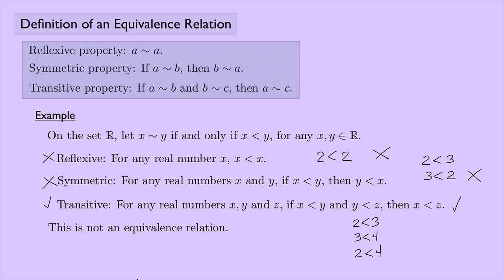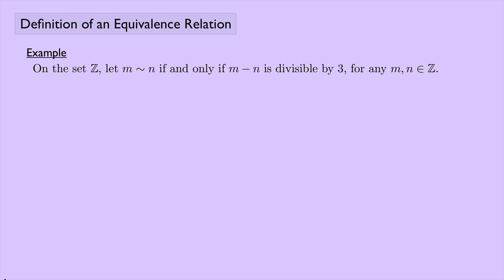Let's try one more example — a bit more complicated. On the set of integers, let M be equivalent to N if and only if M minus N is divisible by three, for any integers M and N. For example, if M equals five and N equals four, then five minus four is one, so they're not equivalent. But if M equals five and N equals two, then five minus two is three, which is divisible by three, so five and two are equivalent. We want to prove this is an equivalence relation.